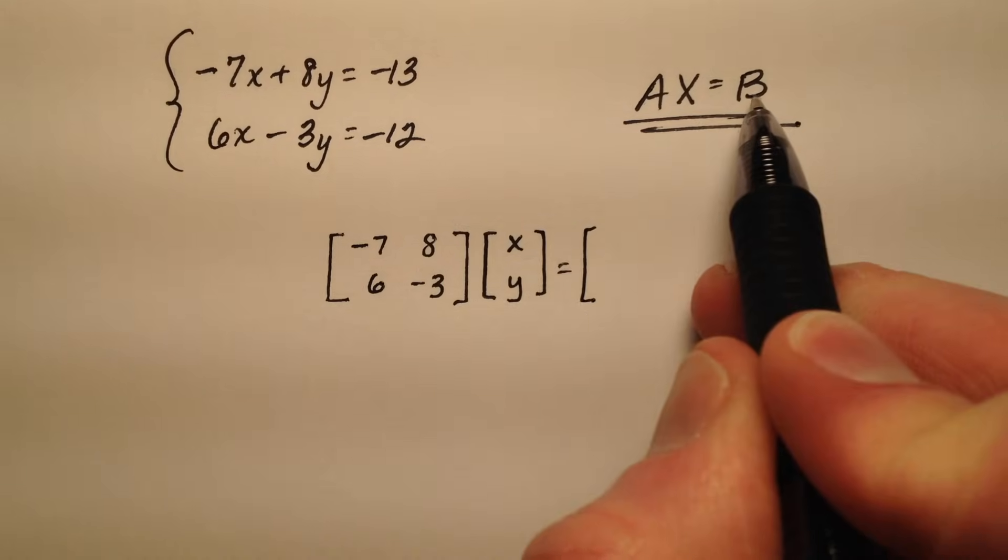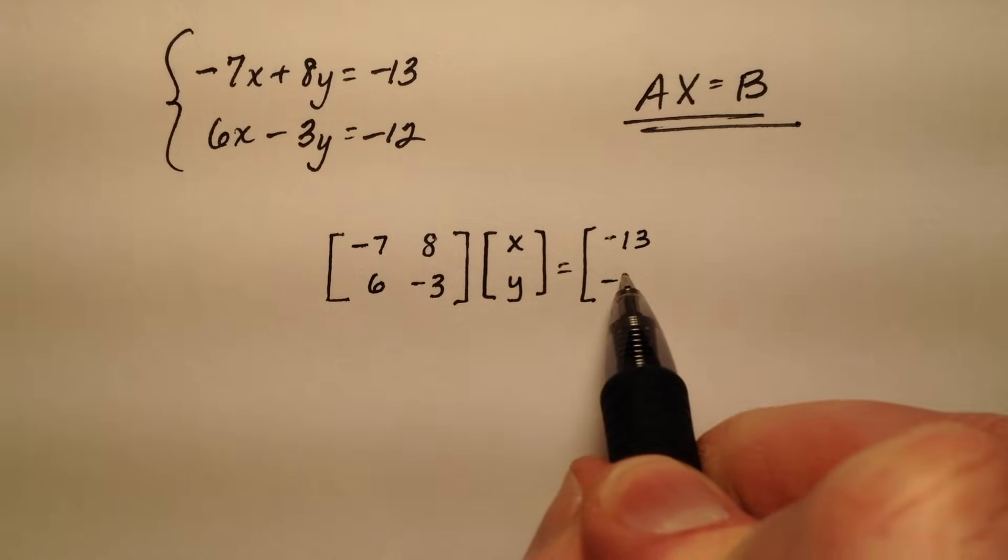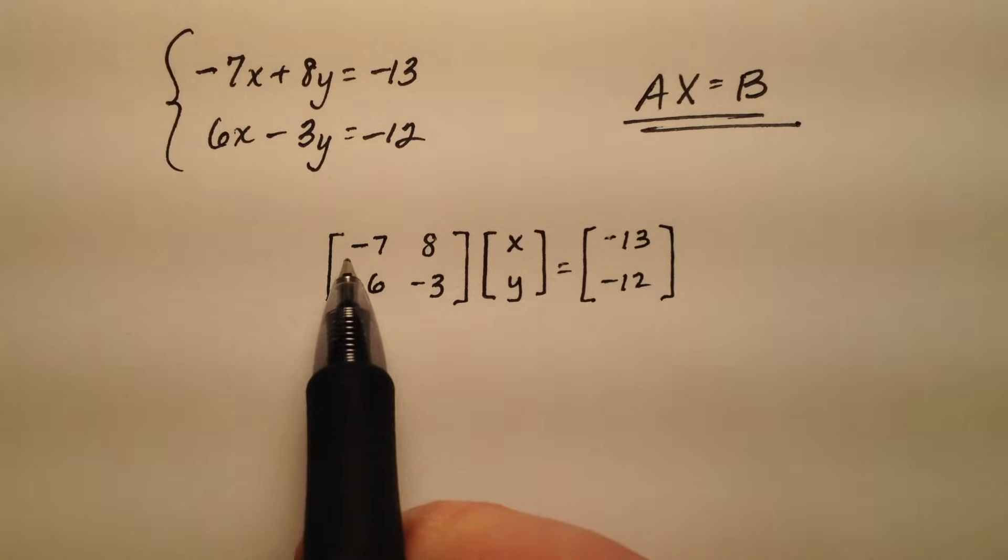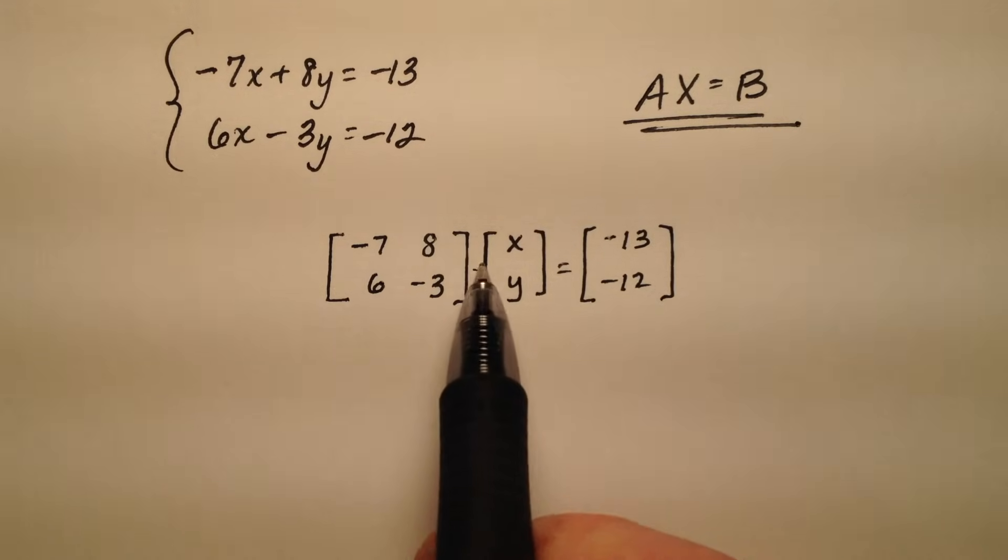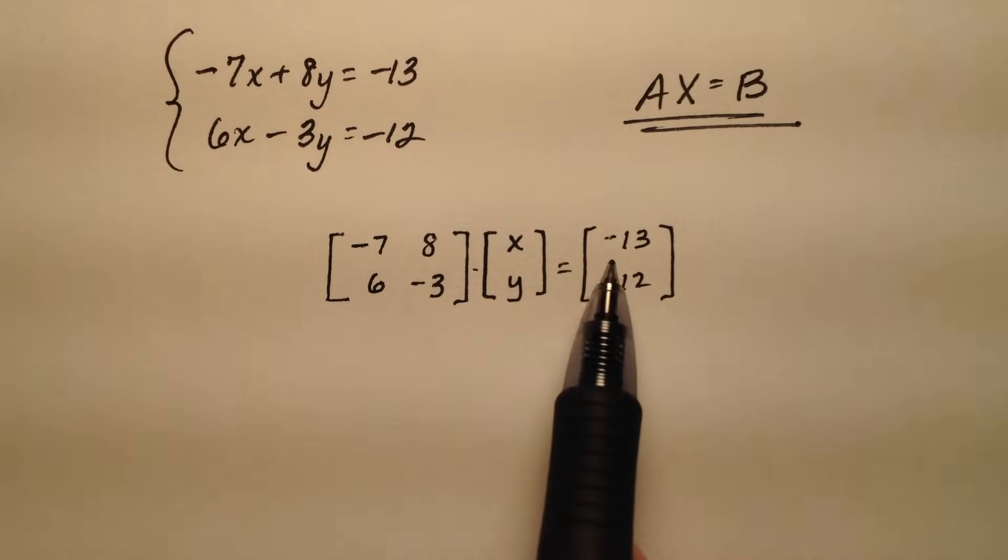That's going to be equal to my constant matrix which is negative 13 and negative 12. Remember if you were to work out this matrix multiplication right here you would just end up with these two equations right here. So we've just rewritten them.